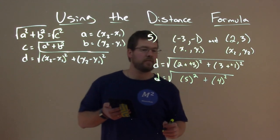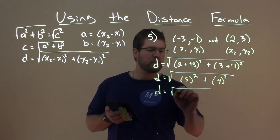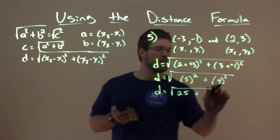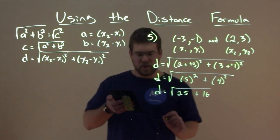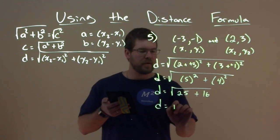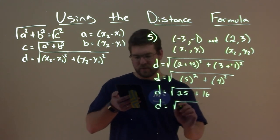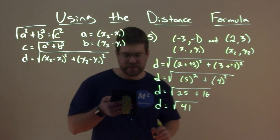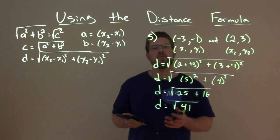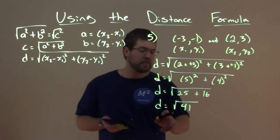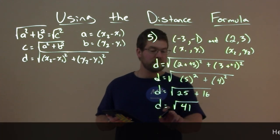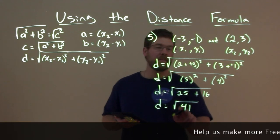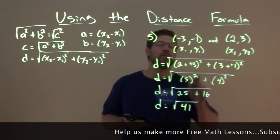Now we're going to simplify this even more. d equals the square root. 5 squared is 25, plus 4 squared is 16. You add them together, and we get 25 plus 16 is 41, and we're actually done here. We can't simplify this really anymore without getting a decimal. So our final distance here is the distance equals the square root of 41, and that's the distance between these two points.